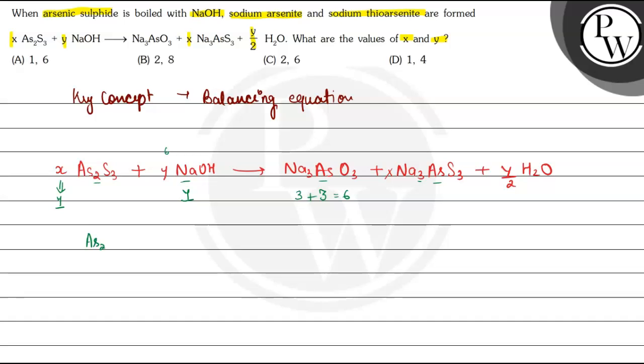So we can write this equation as As2S3 plus 6 NaOH reacts to form Na3AsO3 plus Na3AsS3 plus Y by 2 H2O.